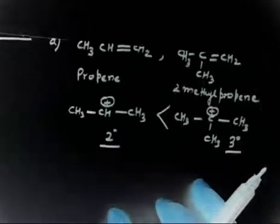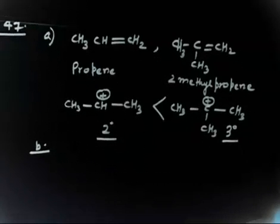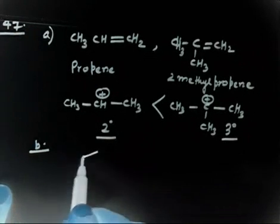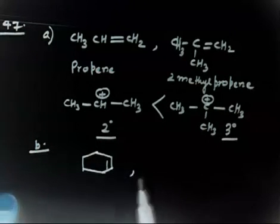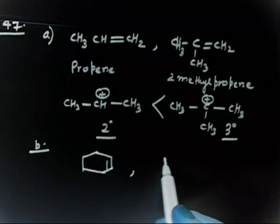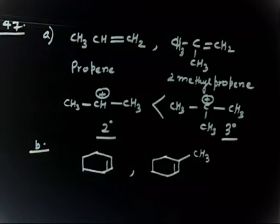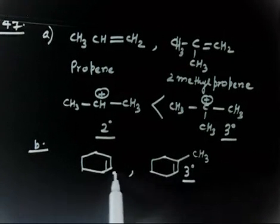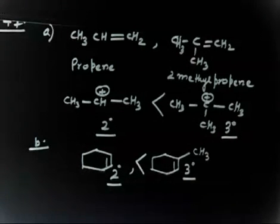For part B, you have cyclohexene and another molecule, 1-methylcyclohexene. Which will be more reactive? The answer is 1-methylcyclohexene, because the carbocation formed will be tertiary, whereas with cyclohexene you will get a secondary carbocation. So 1-methylcyclohexene is more reactive.